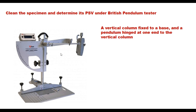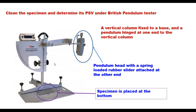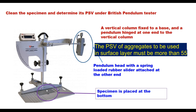The British pendulum tester has a vertical column fixed to a base and a pendulum hinged at one end to the vertical column. The pendulum head has a spring-loaded rubber slider attached to the other end. The specimen is placed below and the pendulum is released from a horizontal position so that it strikes the sample surface with a constant velocity. The distance travelled by the head after striking the specimen is governed by the friction offered by the sample, and the PSV is read directly on the scale. That is the height to which the pendulum rises after striking the surface of the specimen.